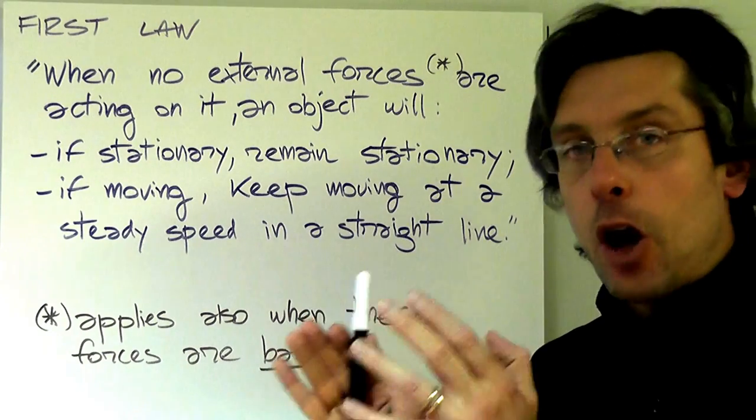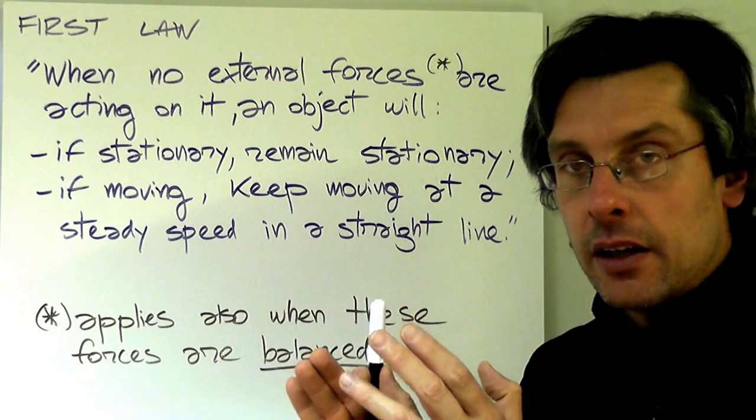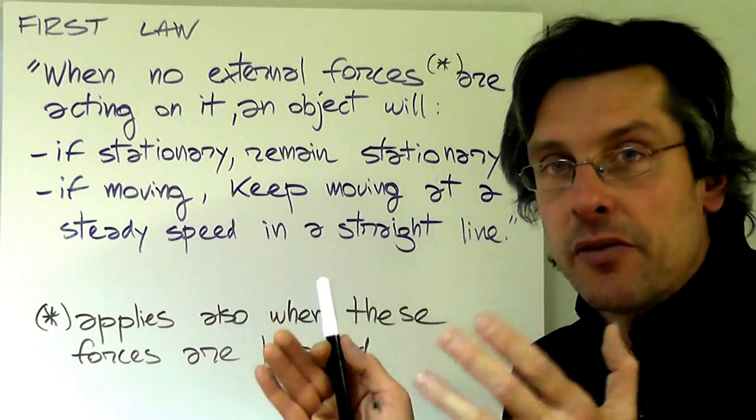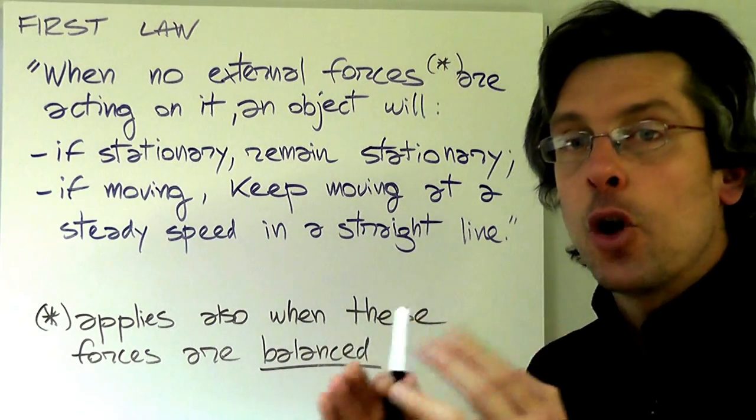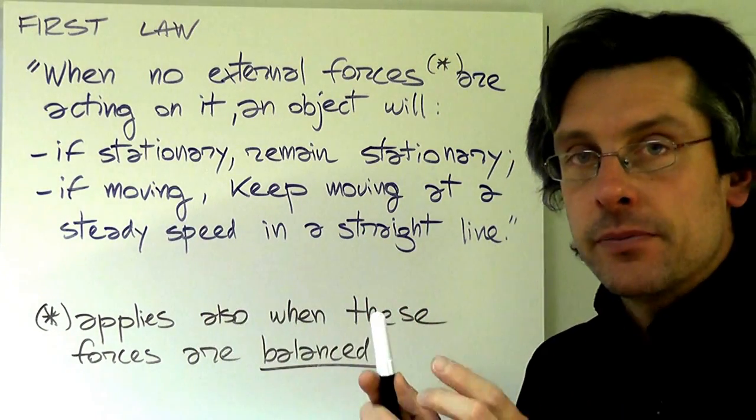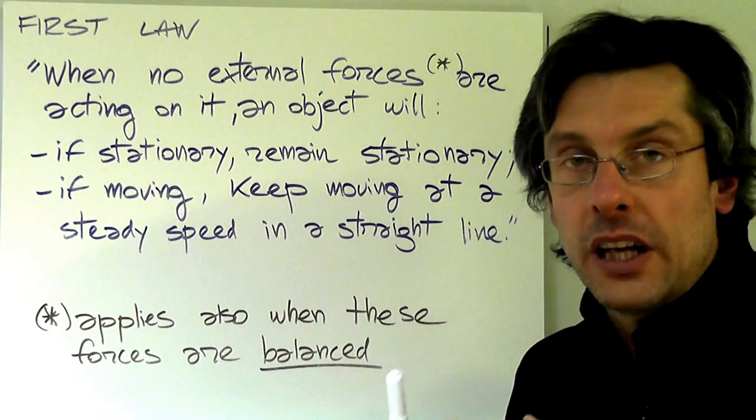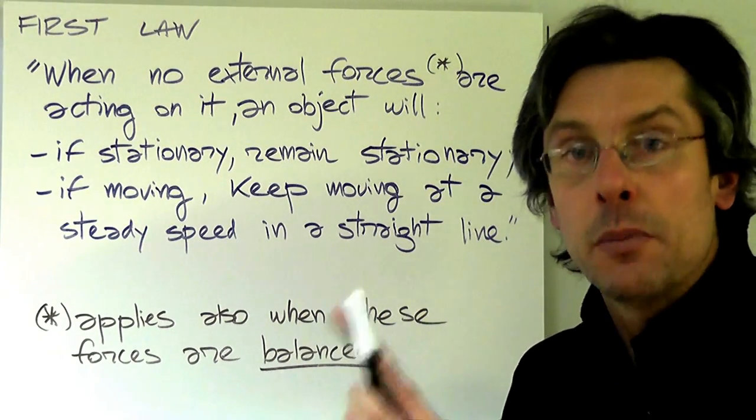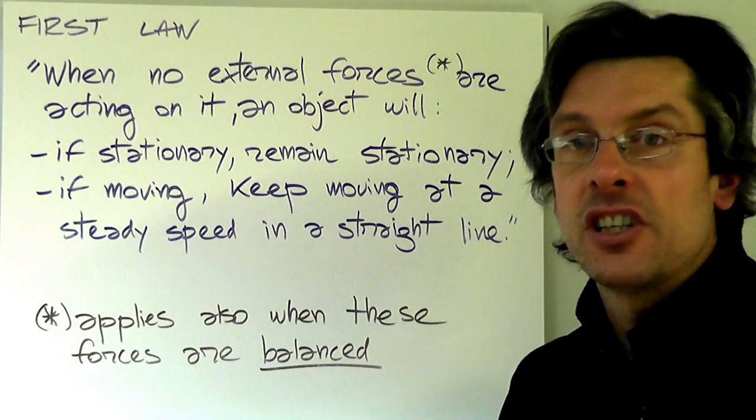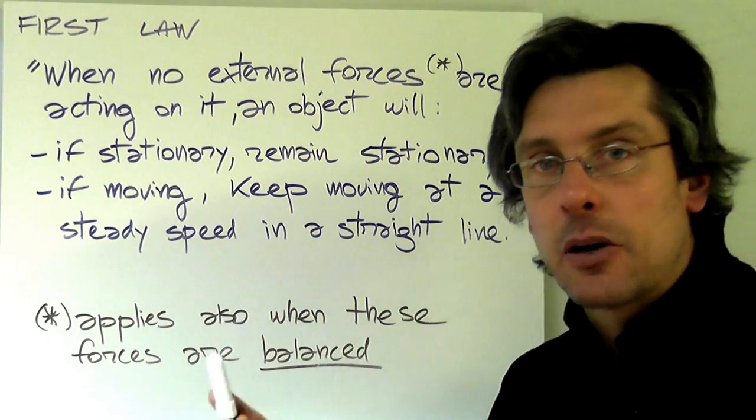If you have an object which is moving and no external forces are acting on that object, that object will keep on moving—not in any way, but will keep on with the same speed and going in the same direction. We can reformulate this by saying the object will keep the same velocity, because velocity is speed and direction.